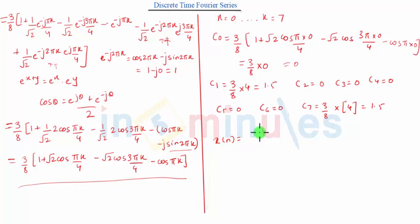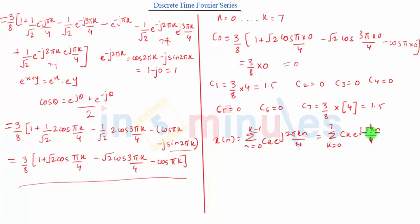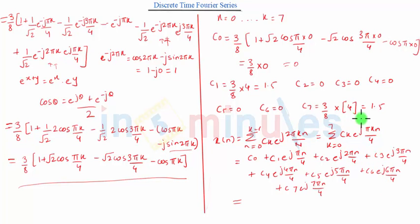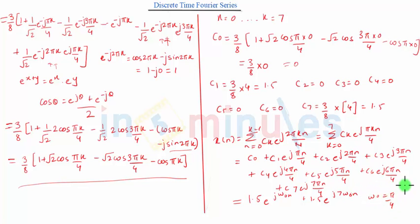Finally, the Fourier series representation of x(n) is given by x(n) = Σ[k=0 to N-1] c(k) · e^(j2πkn/N). After substituting the values, we get Σ[k=0 to 7] c(k) · e^(jπkn/4). Since only c(1) and c(7) are non-zero at 1.5, we get x(n) = 1.5·e^(jπn/4) + 1.5·e^(j7πn/4). This is the final Fourier series representation of x(n).